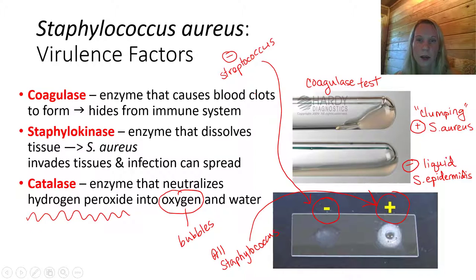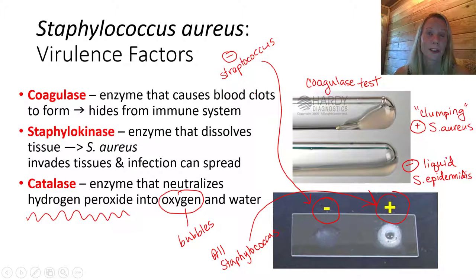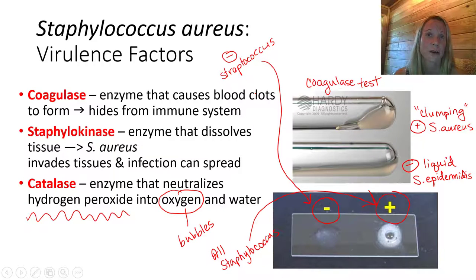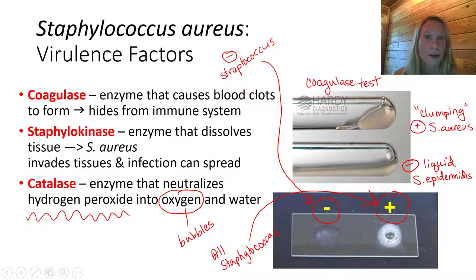We start using the term 'differential' as we move through diagnostic tests to distinguish one bacterial strain from another, because under the microscope it's not always easy to tell. For both Streptococcus and Staphylococcus bacteria, they're both gram-positive and both cocci. Staphylococcus is clusters of cocci, whereas Streptococcus is chains of cocci. It helps to have multiple tests to confirm your diagnosis.